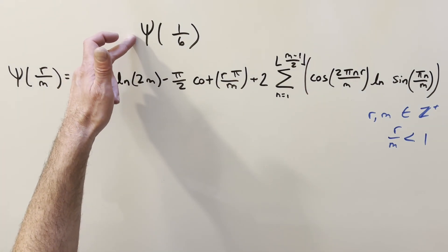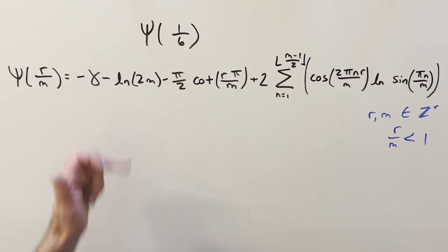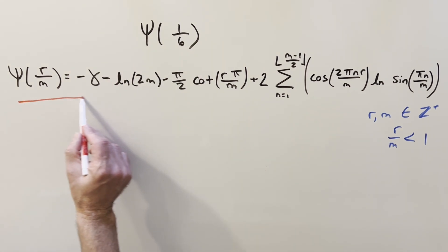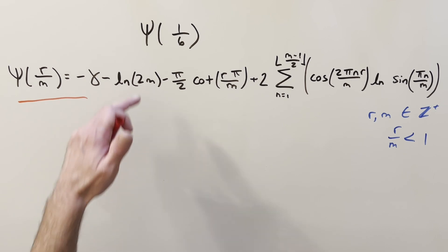We want to use this to evaluate for an exact value of di-gamma of 1 over 6. So don't get too intimidated by this whole thing because I'm not going to try to derive it or figure out where all this came from. We're just going to use the plug-in values and try to see if we can get a nice value for di-gamma of 1 over 6.